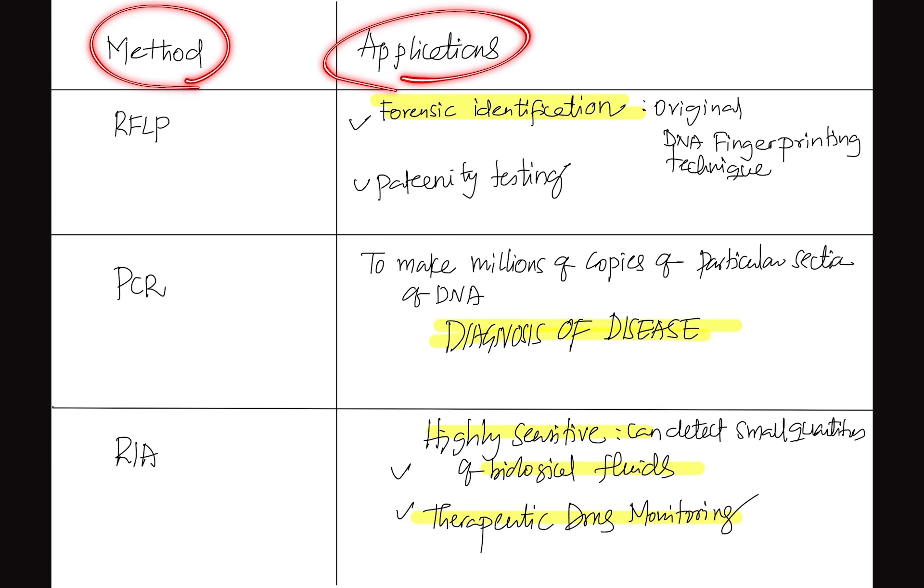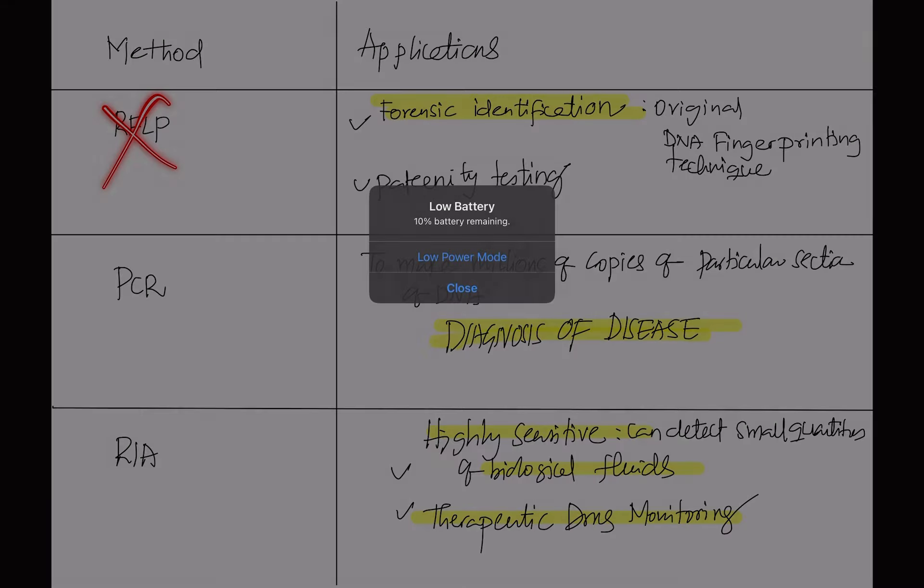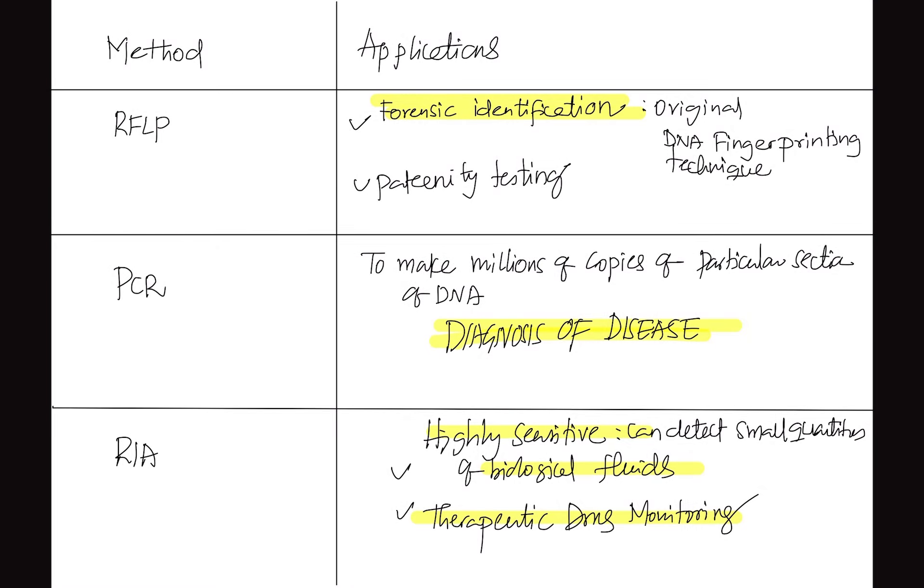One more area people are struggling is the applications part because three of these methods have similar applications. If you take RFLP and PCR, we are not doing RFLP now because RFLP has lot of disadvantages. PCR has only one disadvantage: there is risk of DNA sample contamination. Because this test is so sensitive, there is risk of contamination. Apart from that, the applications are similar. But when you write answer for these questions, you have to highlight the major application. RFLP was used for mainly forensic identification, for DNA fingerprinting technique, and mainly paternity dispute solving. So focus more in the lines of genomic sampling or genomic sequence identification or species identification. RFLP has more involvement in identification of a genome, not multiplication.